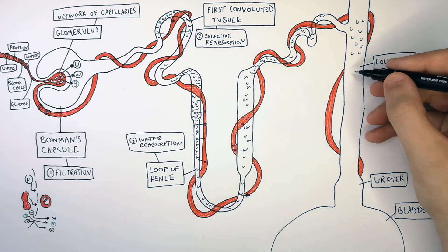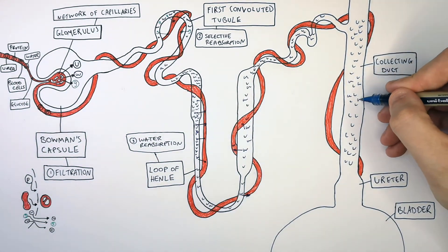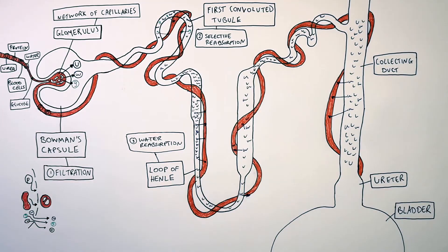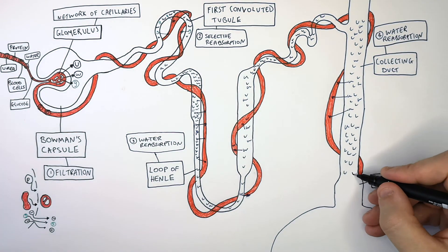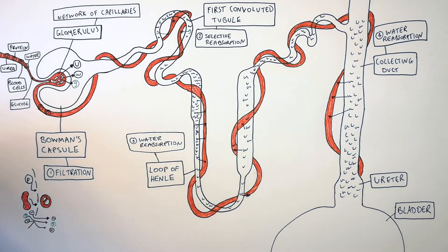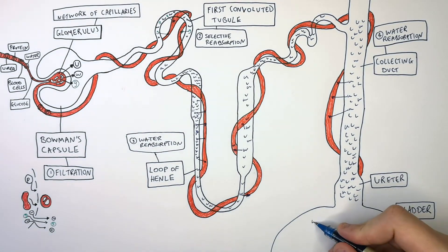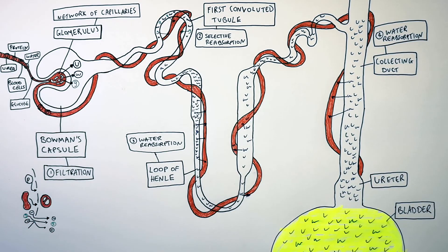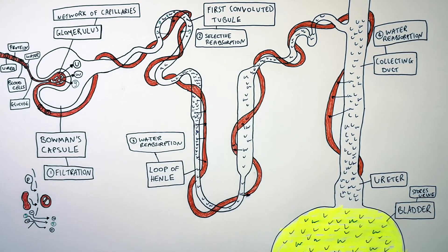The remaining urea and water enter the collecting duct via the second convoluted tubule. In the collecting duct, water is reabsorbed back into the blood. If there is a high concentration of water in your blood and you're well hydrated, much of that water in the collecting duct will pass through the ureter to the bladder and out of your body. Any remaining urea and water that needs to be excreted passes as urine through the ureter into the bladder where it is stored. The urine stored in the bladder is then passed out of the body via the urethra.